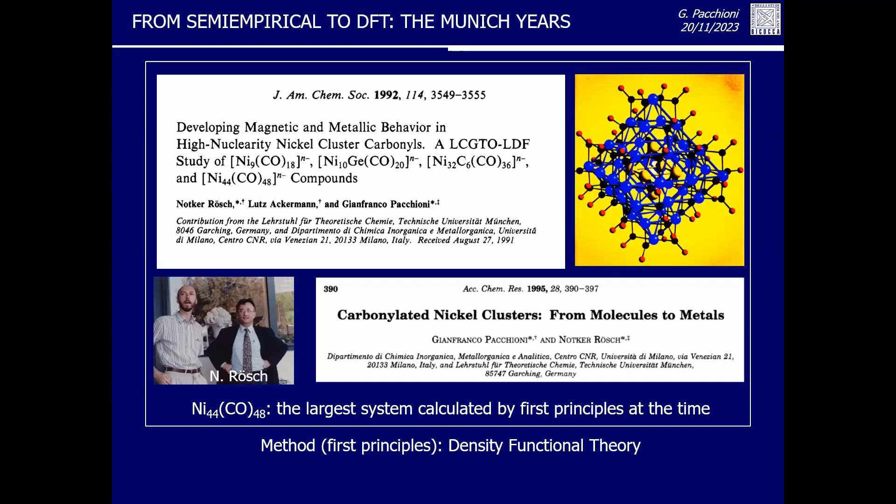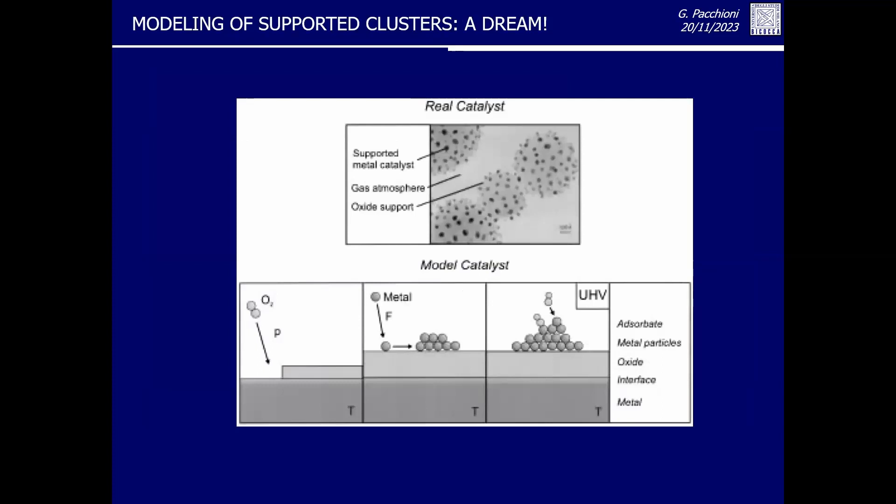We confirmed that the ligand shells change the properties of a metal particle: metallic atoms inside the particle remain intact, while those at the surface are strongly perturbed by the ligands. The main goal and dream at the time was to be able to simulate catalysts — complex systems composed of metal particles on an oxide surface. I started to use cluster models to represent oxides, starting from the simple ionic oxide magnesium oxide. Since I didn't have enough computer time, I represented MgO largely by point charges due to its ionic character.